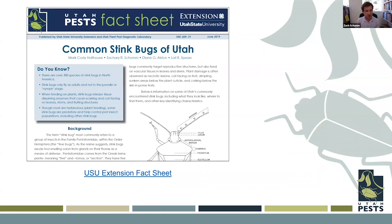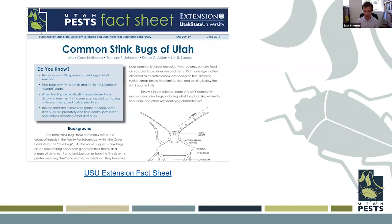Before moving to the research side, there is a common stink bug fact sheet that explains species found in Utah, which also translates to other regions in the Mountain West. It describes beneficial and predatory stink bugs in agricultural sites that help control pest species. It's available on the Utah Pest website — just search 'common stink bugs of Utah' — and includes photos of nymphs and good identification resources.